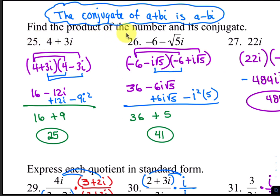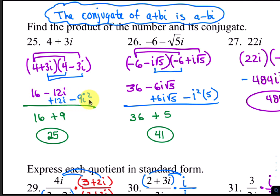In the next section, find the product of the number and its conjugate. The conjugate of a complex number a plus bi is a minus bi — you just change the sign in the middle. The conjugate of 4 plus 3i is 4 minus 3i. Multiplying 4 plus 3i times 4 minus 3i: distributing gives 16 minus 12i plus 12i minus 9i squared. Negative 12i plus 12i cancels, and negative 9i squared becomes positive 9. 9 plus 16 makes 25.